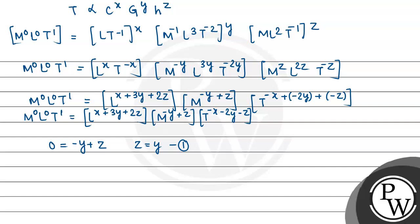Next, we equate L's power: 0 equals x plus 3y plus 2z. Now from equation 1, we can see z's value is y, so we substitute y in place of z here: 0 equals x plus 5y. So from here, x is minus 5y. So this is our second equation.